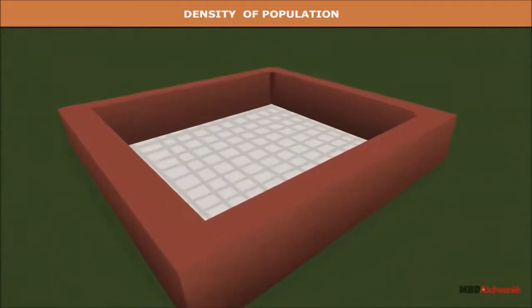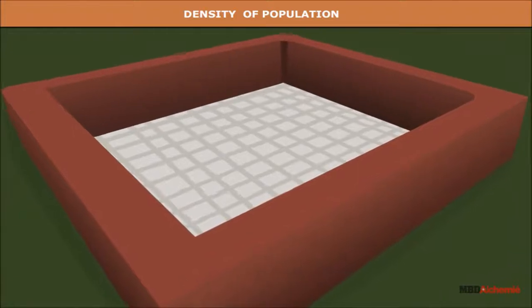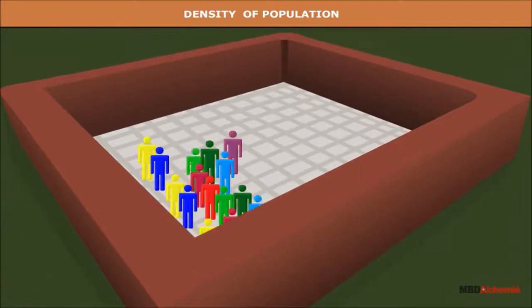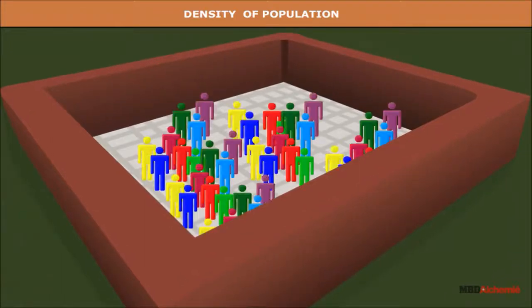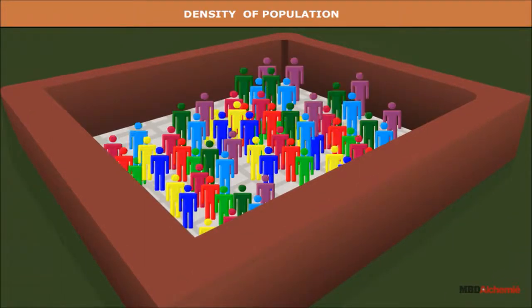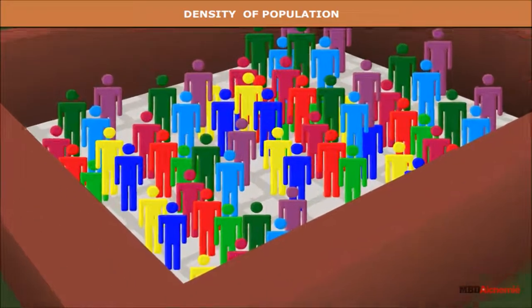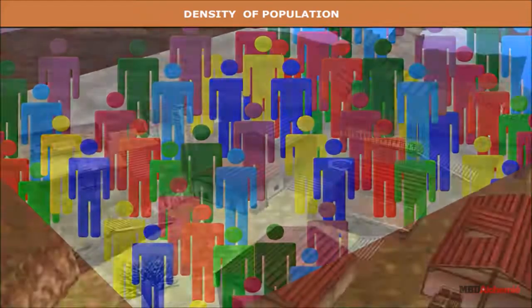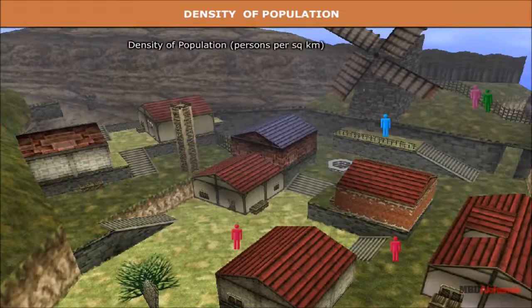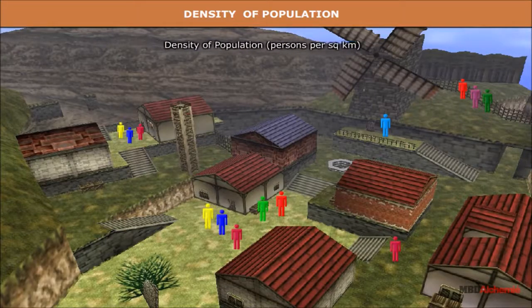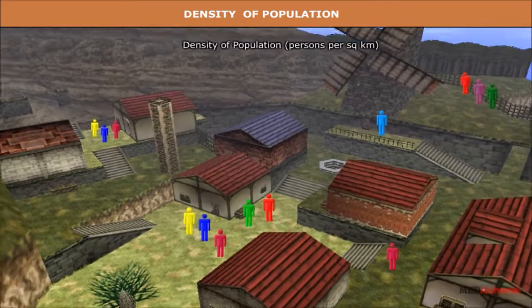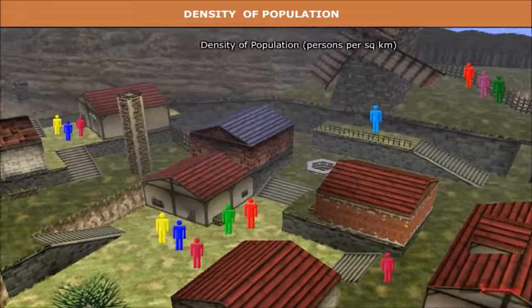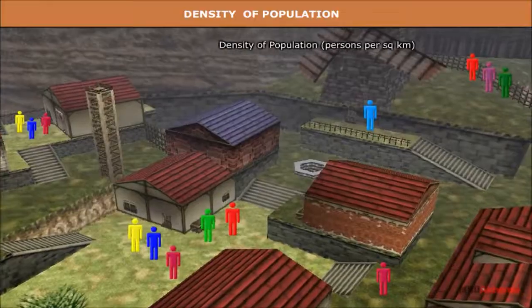Each unit of land has a confined capacity to support people living on it. Thereupon, it is necessary to understand the ratio between the number of people to the size of land. This ratio is the density of population and is measured in persons per square kilometer.